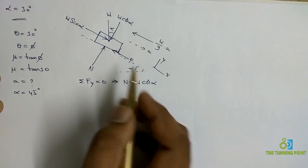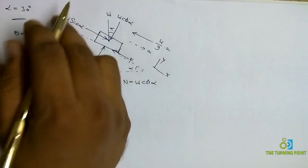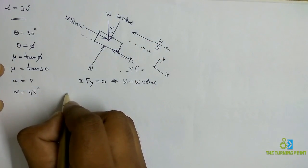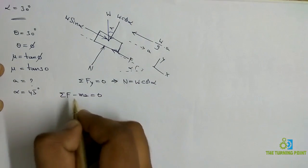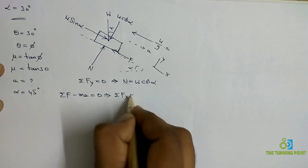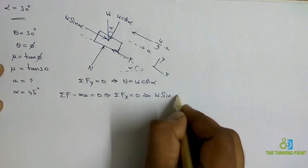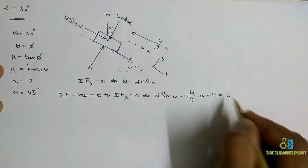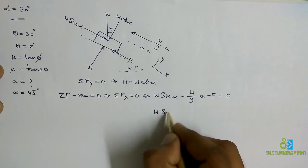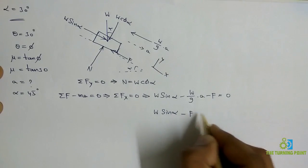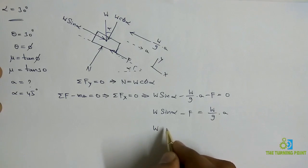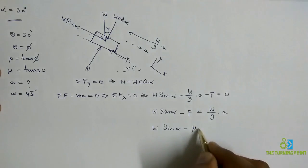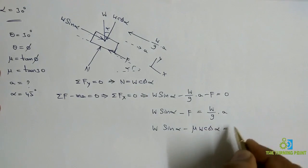Now consider sigma Fx equals zero. In dynamics we include the inertia force. Along positive x-direction: W·sin alpha. Along negative x-direction: the inertia force (W/g)·a and friction force F. So: W·sin alpha minus (W/g)·a minus F equals zero. Since F equals mu·N and N equals W·cos alpha, we substitute: W·sin alpha minus mu·W·cos alpha equals (W/g)·a.